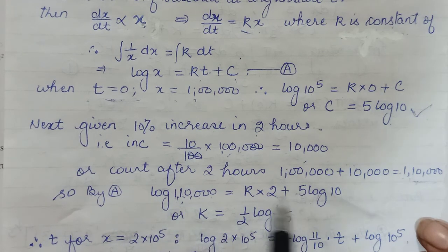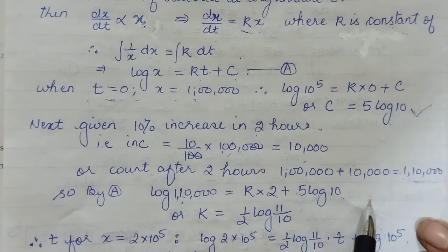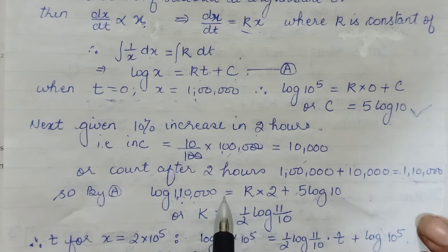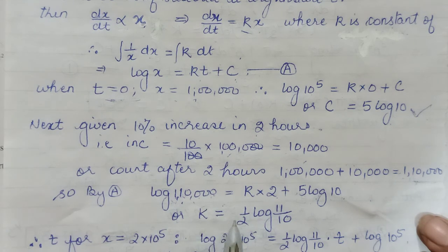So if you bring this to this side and expand it, then this would be log of 1 lakh. So it would be log of a/b due to minus sign. So 11 followed by 4 zeros upon 1 followed by 5 zeros. 4 zeros get cancelled and you are left with only 11/10.